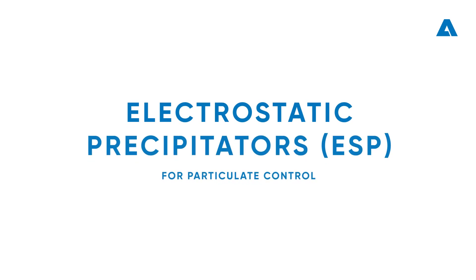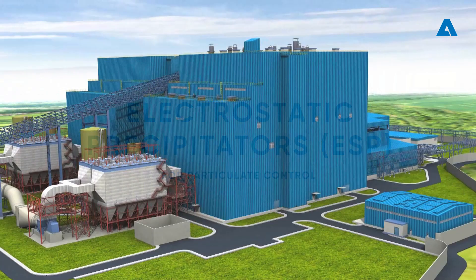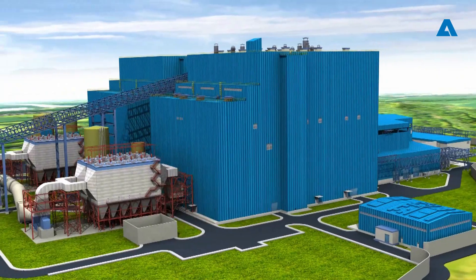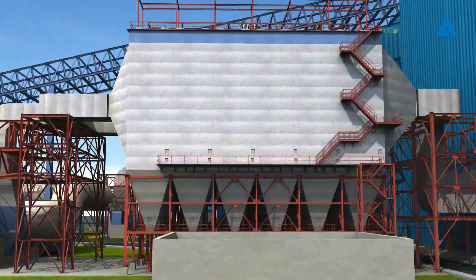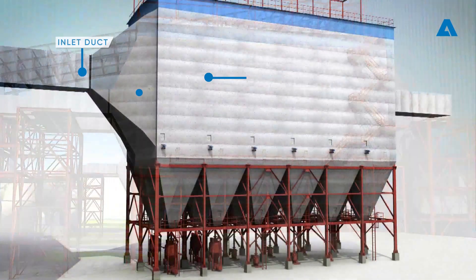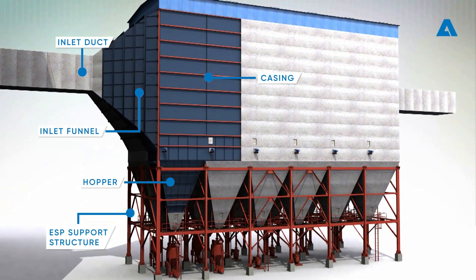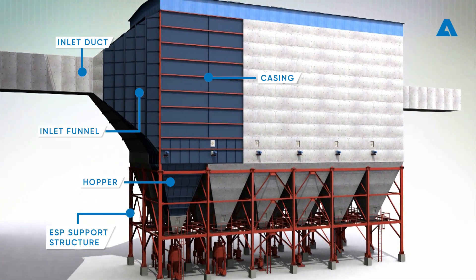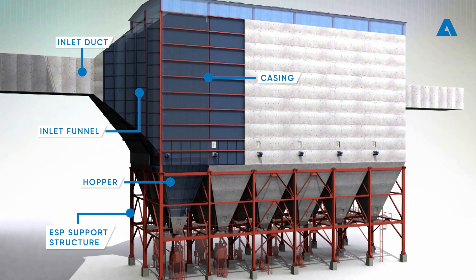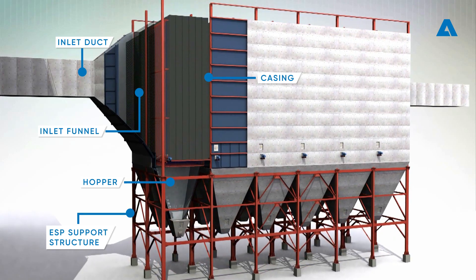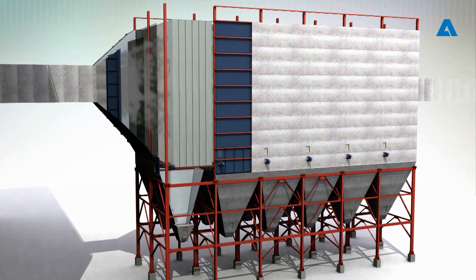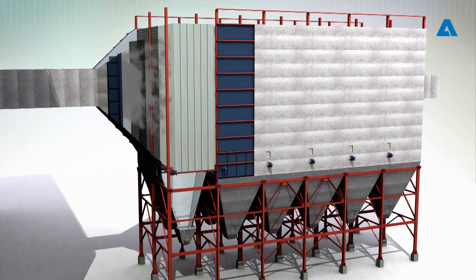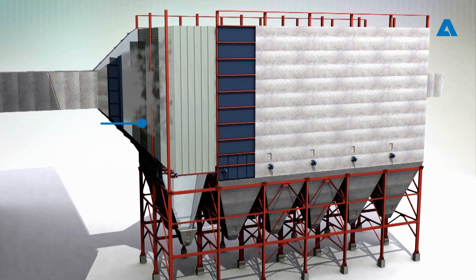An electrostatic precipitator, or ESP, is widely used to filter up to 99.99% of particulate matter emissions from the flue gas in power plants and other process industries before discharging clean gas into the atmosphere. The unfiltered flue gas enters the ESP through the inlet funnel and is distributed across the ESP cross-section by two or three layers of gas distribution screens.